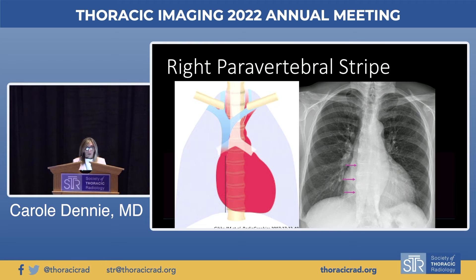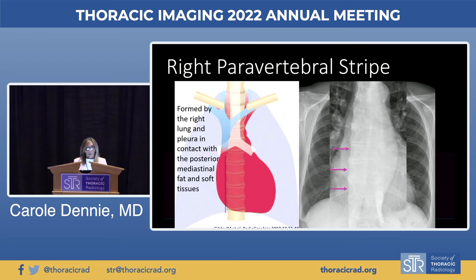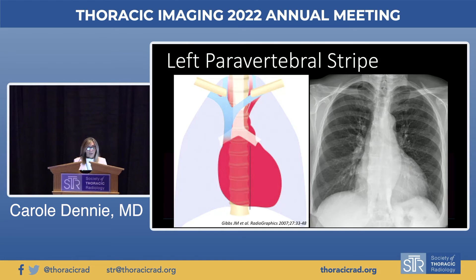The right paravertebral stripe is formed by the right lung and pleura in contact with the posterior mediastinal fat and soft tissues, usually extending from the eighth to the twelfth ribs. It may appear as a line due to the Mach band phenomenon from lateral inhibition of the retina when there's an abrupt change in density. On CT, the fat adjacent to the spine is visible. It can be widened in the presence of neurogenic tumors or other abnormalities very posterior adjacent to the spine.